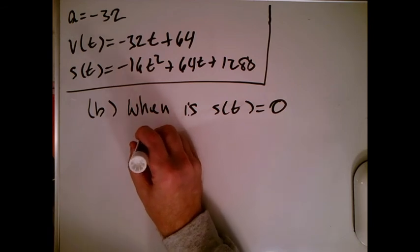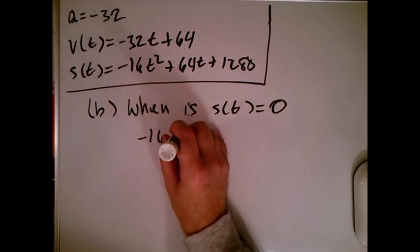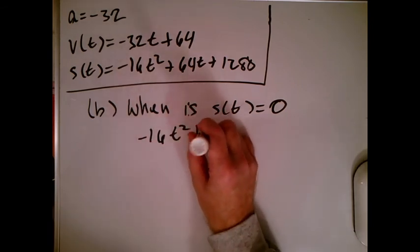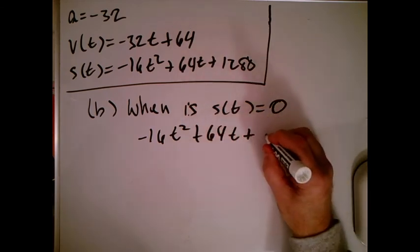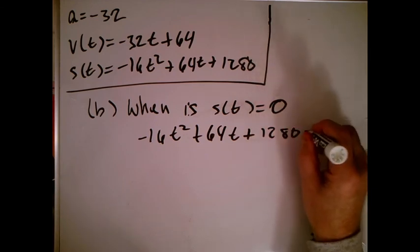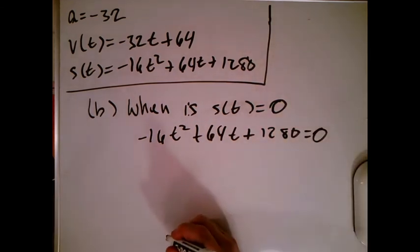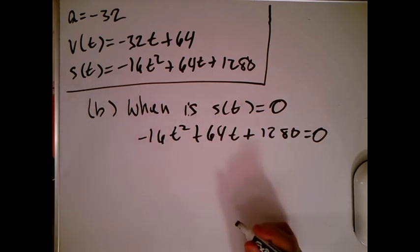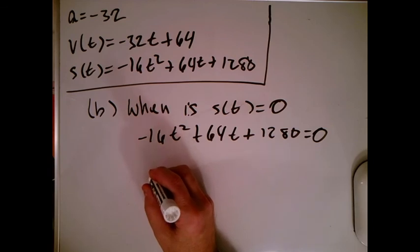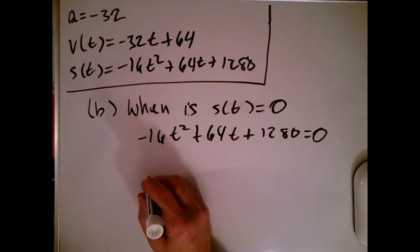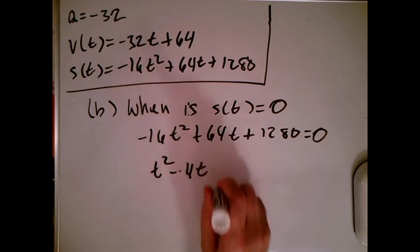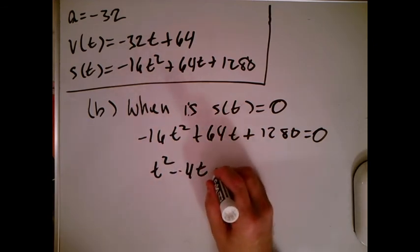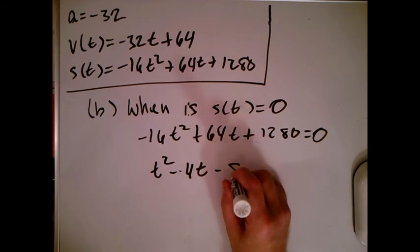So we're trying to solve the equation minus 16t squared plus 64t plus 1280 equals 0. We could try to just use the quadratic formula or factor from there. I am going to pull a minus 16 out. How about if I just divide both sides by minus 16? Minus 16 can't be equal to 0 anyway, so that's safe. So I'm going to write down t squared minus 4t minus 80 equals 0.